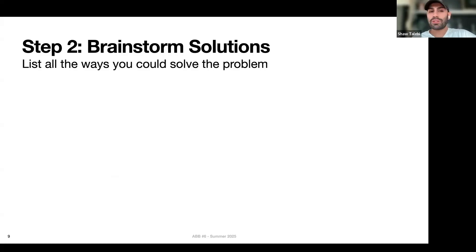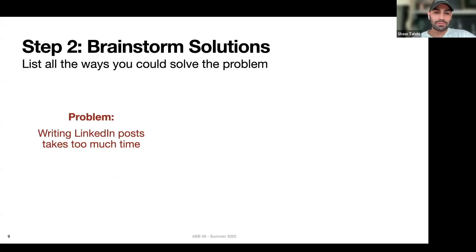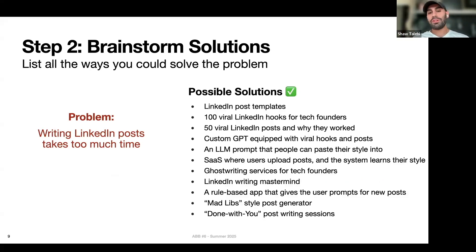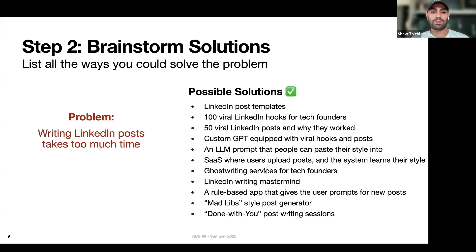Now that we've identified a problem, we can brainstorm solutions. Let's say we're going for 'writing LinkedIn posts takes too much time.' Here it's not about AI solutions or even software solutions — just any solution that might solve this problem. Here's a ton of them: LinkedIn post templates, 100 viral LinkedIn hooks for tech founders, 50 viral LinkedIn posts and why they worked, a custom GPT equipped with viral hooks and posts, an LLM prompt that people can paste their style into, a SaaS where people upload posts and the system learns their style, ghostwriting services for tech founders, a rule-based app, a Madlib-style post generator, done-with-you writing sessions.